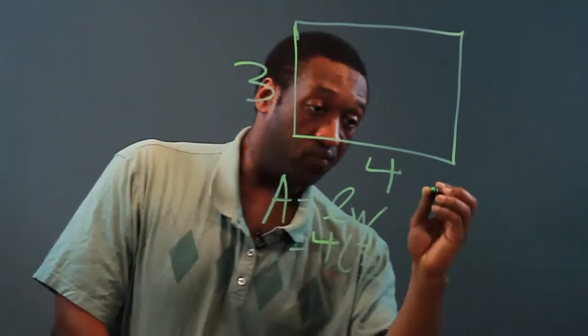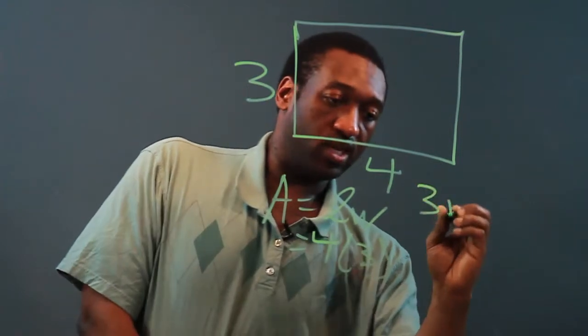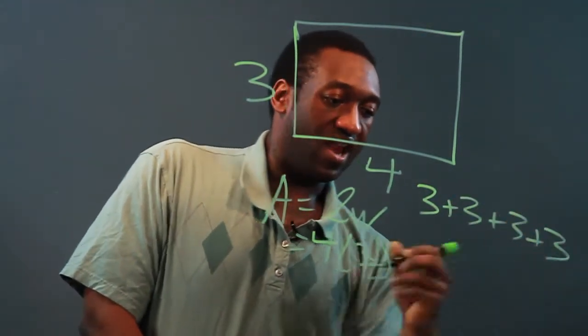4 times 3 is 4 sets of 3's. So we can say 3 plus 3 plus 3 plus 3 and add.